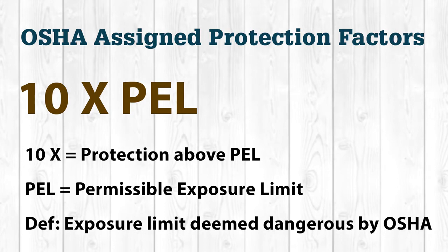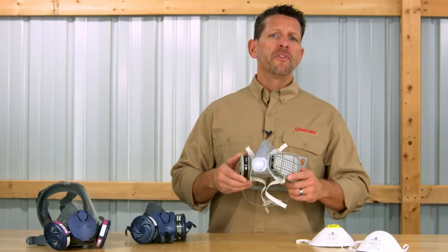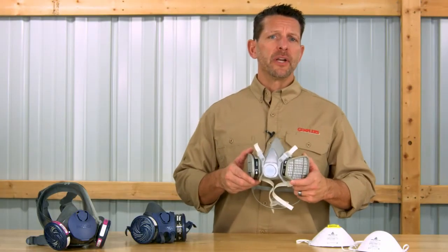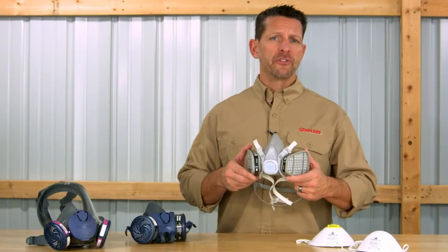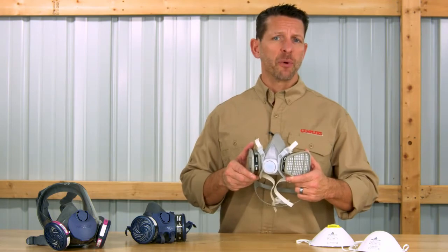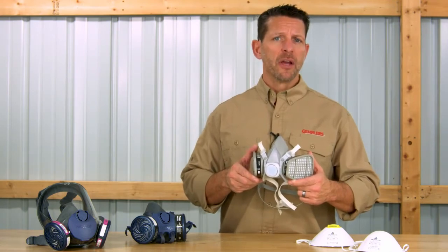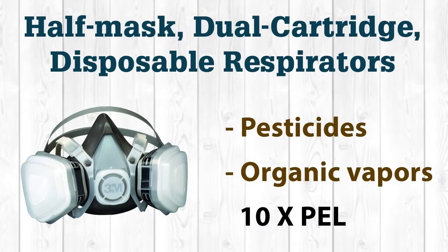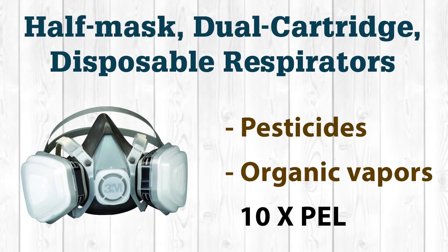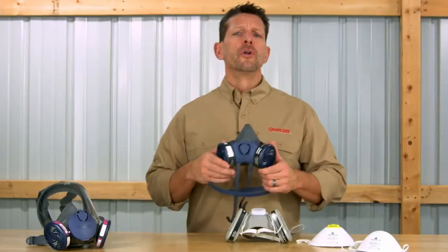Moving to the maintenance-free dual cartridge half mask disposable respirators, these are best used when applying pesticides and organic vapors. Because they're disposable, there's no cartridge inventory to maintain. These also have a 10x PL range.